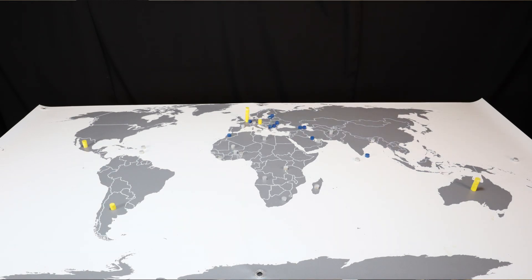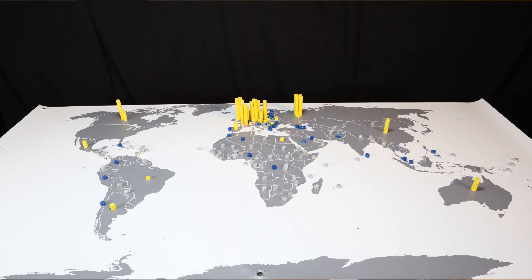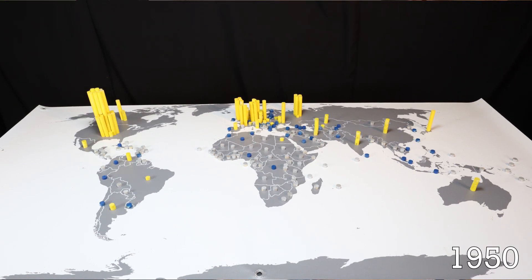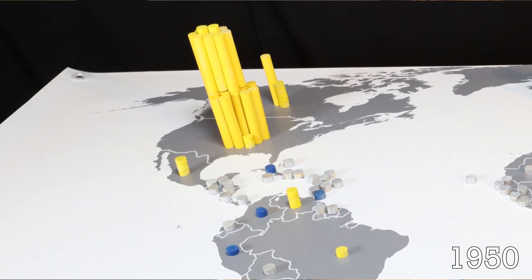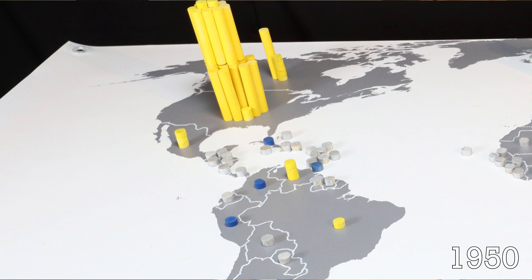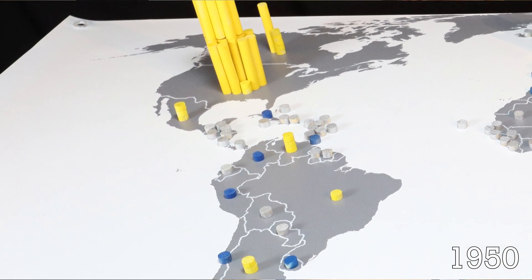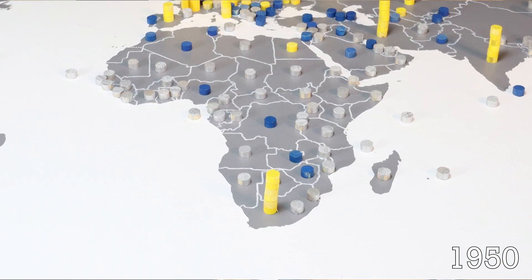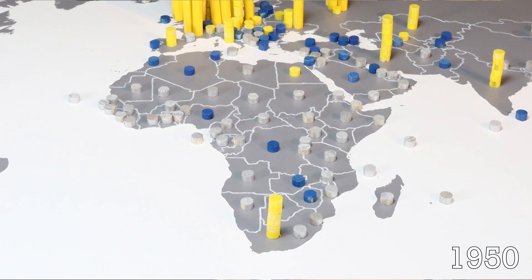In 1950, this is how much carbon dioxide every nation on Earth emitted. On this map, every yellow marker represents 10 million tons of carbon dioxide emitted yearly. We also mark nations between 1 and 10 million tons with a blue marker and nations below 1 million tons with a silver marker.